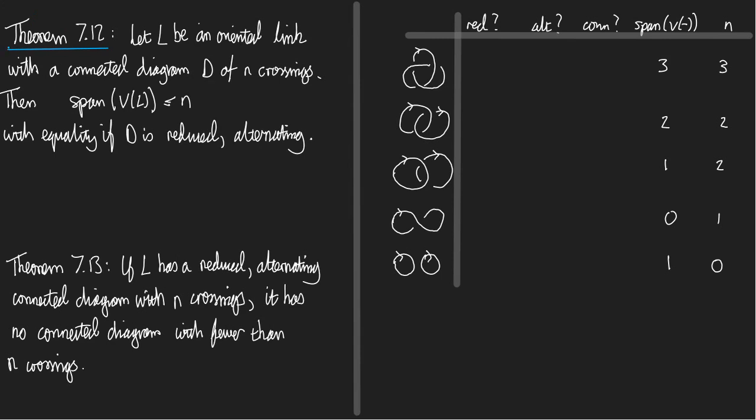Here we are, theorem 7.12. As usual, let L be an oriented link with a connected diagram D. And we're going to assume that D has n crossings. Then the span of the Jones polynomial of L is less than or equal to n. With equality, in other words, this less than or equal to is an equals if D is reduced and alternating. So look carefully. To state the theorem at all, we need the diagram to be connected. And then to draw the strongest conclusion, the equality for the span, we need it to be reduced and alternating.